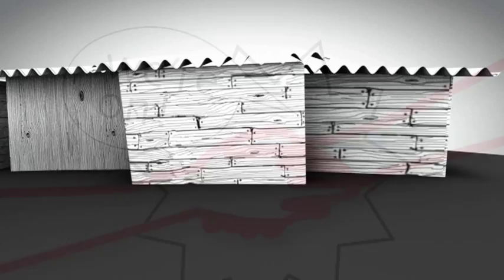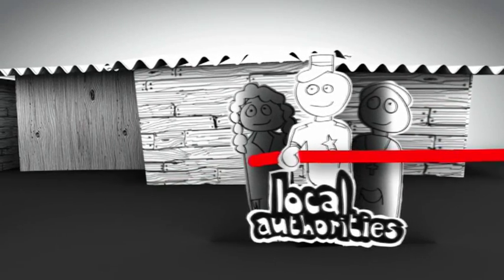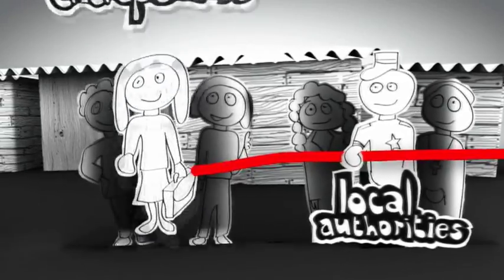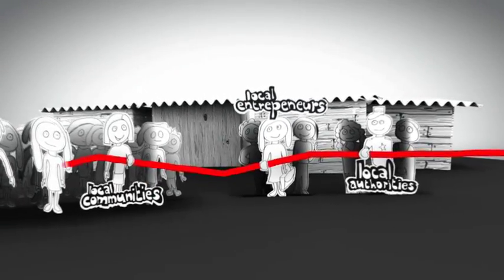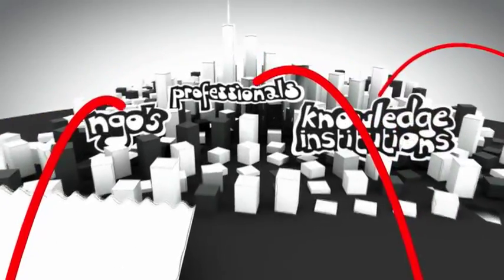Urban Matters sees great opportunities in improving the living environment in slum neighborhoods by bringing together the key stakeholders and connecting them. Linking local authorities, entrepreneurs, and communities to knowledge institutes, innovators, commercial companies, NGOs, and water, waste, and energy experts.